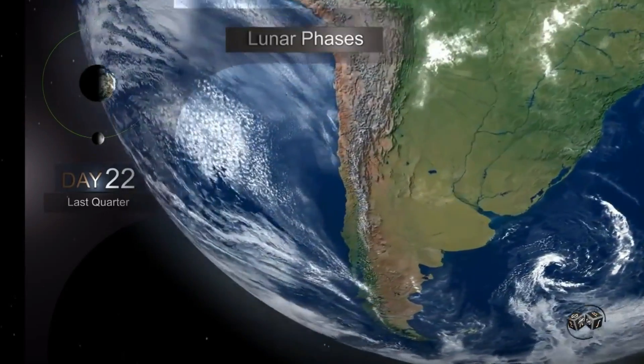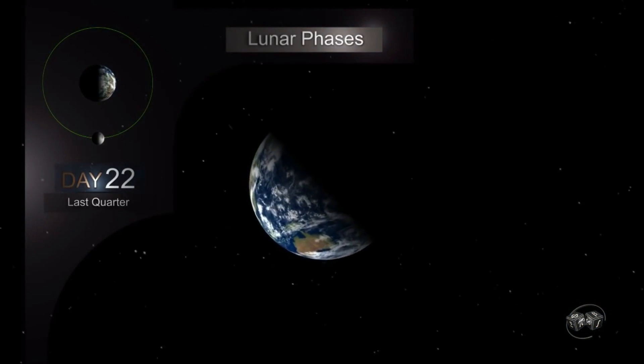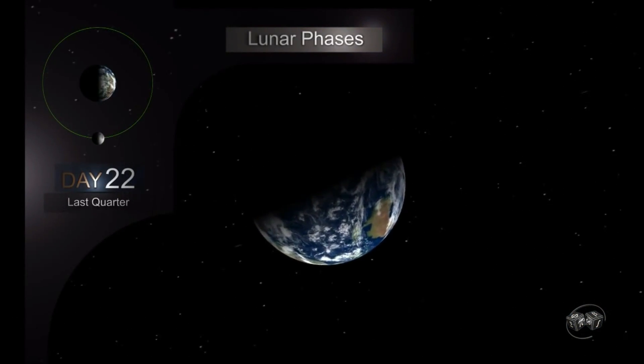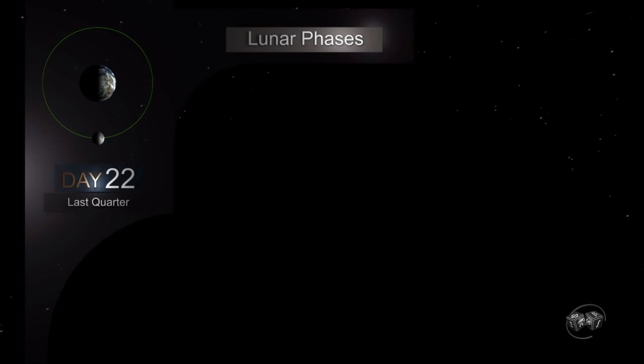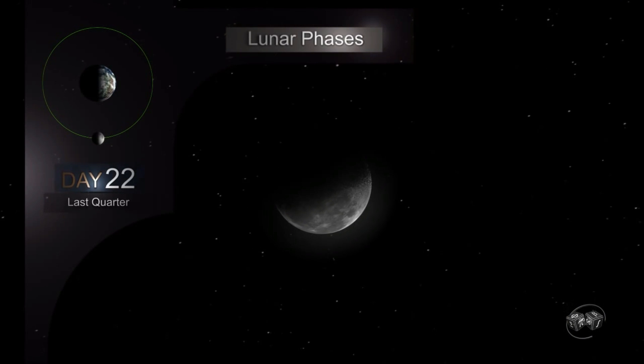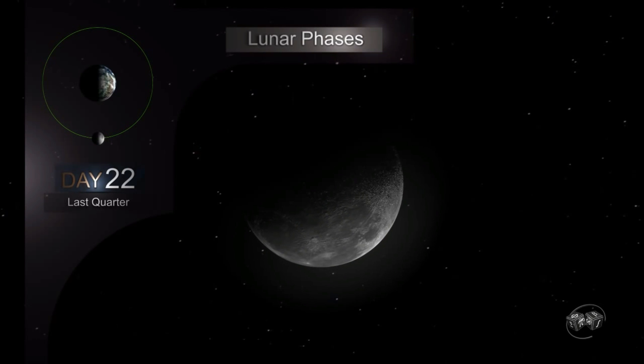In the southern hemisphere at a latitude of between 10 to 30 degrees we see this other waning Moon. This latitude corresponds to much of the South American countries, countries in southern Africa, and northern and central Australia.